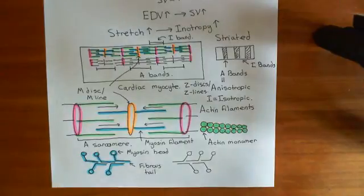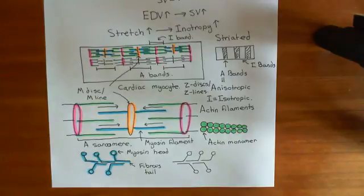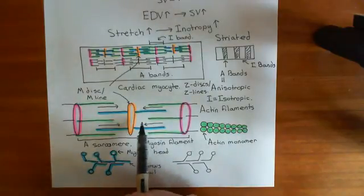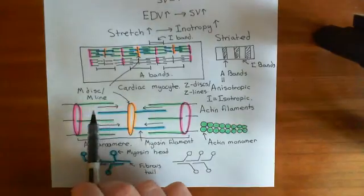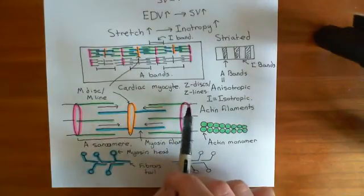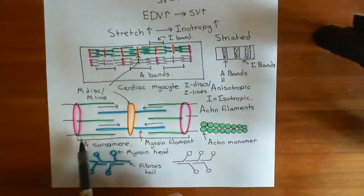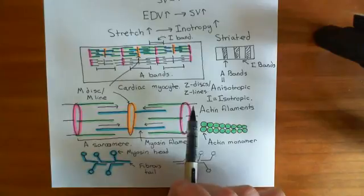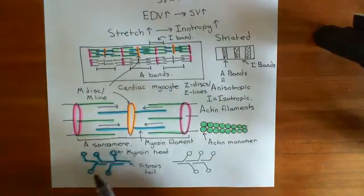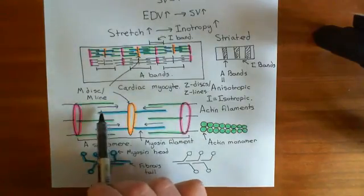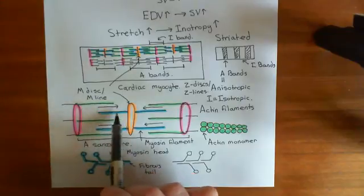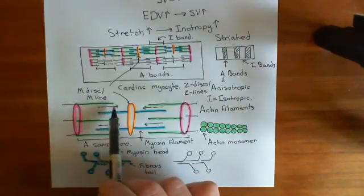Now let's discuss how the Frank-Starling law of the heart works — how, when we stretch the wall of the left ventricle, are we going to get a greater force of contraction? To understand this, we need to look at the sarcomere and think about what the optimal length for the sarcomere is if we are trying to develop force. Where is the force generated? It's generated by the myosin filaments pulling on the actin filaments.